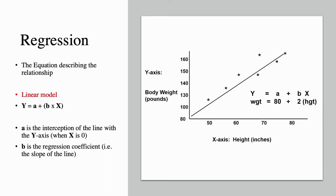Regression: the equation describing the relationship between two variables using a linear model. y = a + bx. A is the interception of the line with the y-axis when x is equal to 0, and b is the regression coefficient — in other words, the slope of the line.